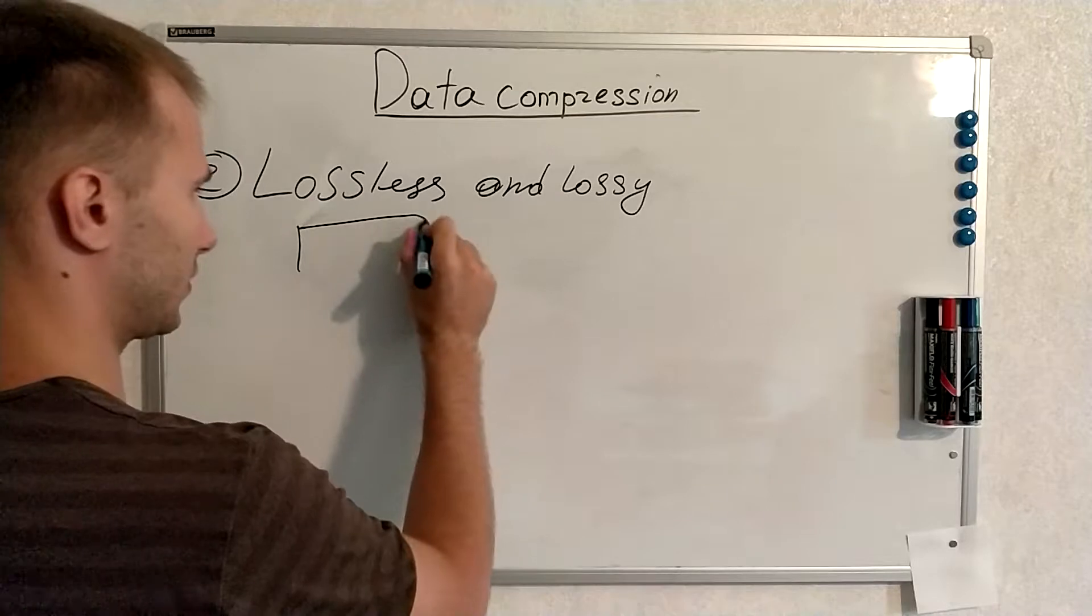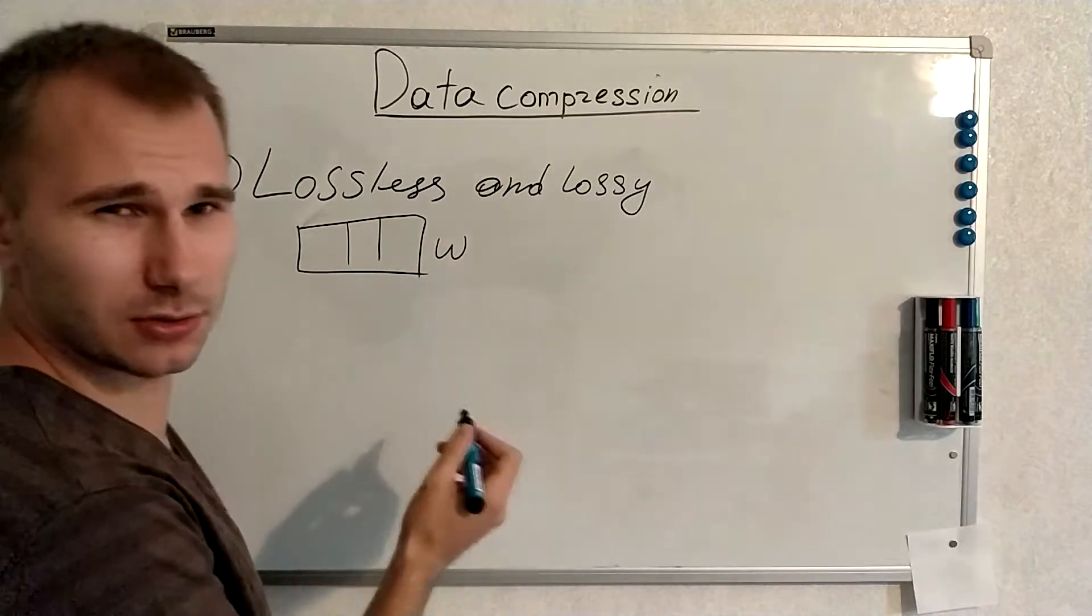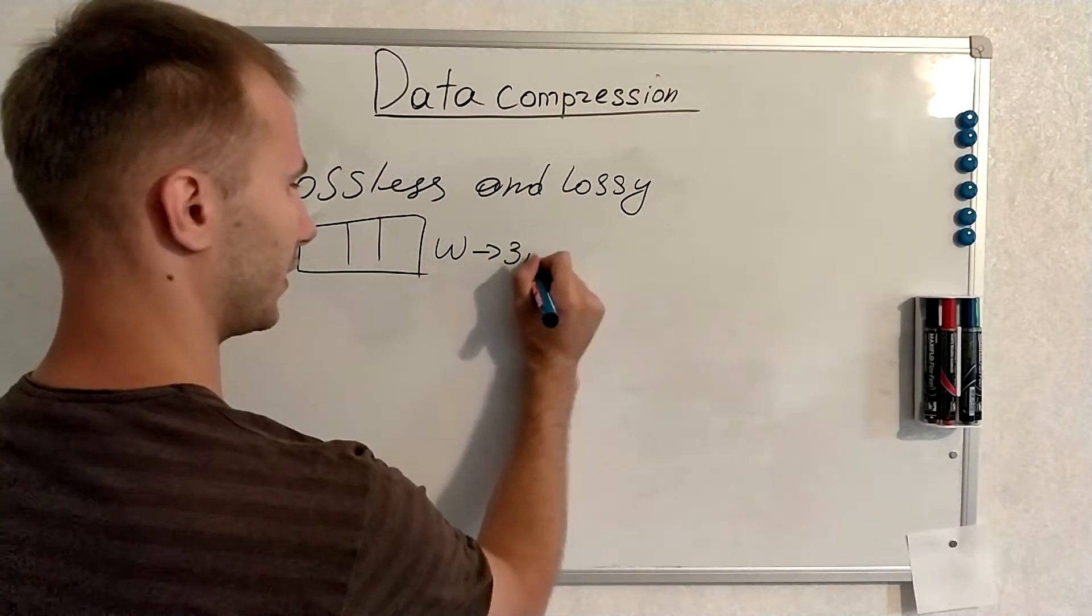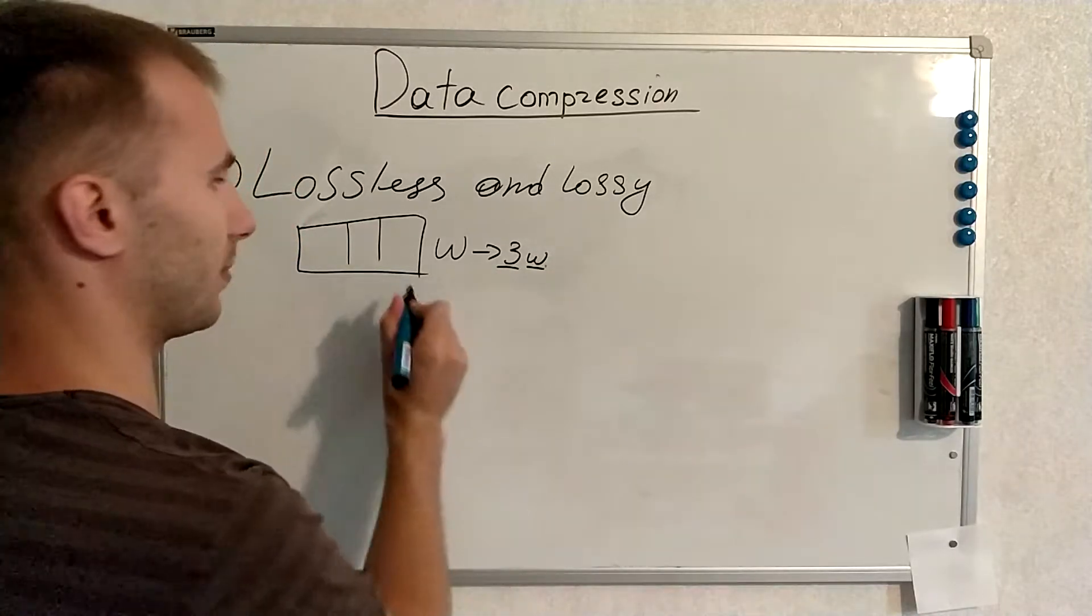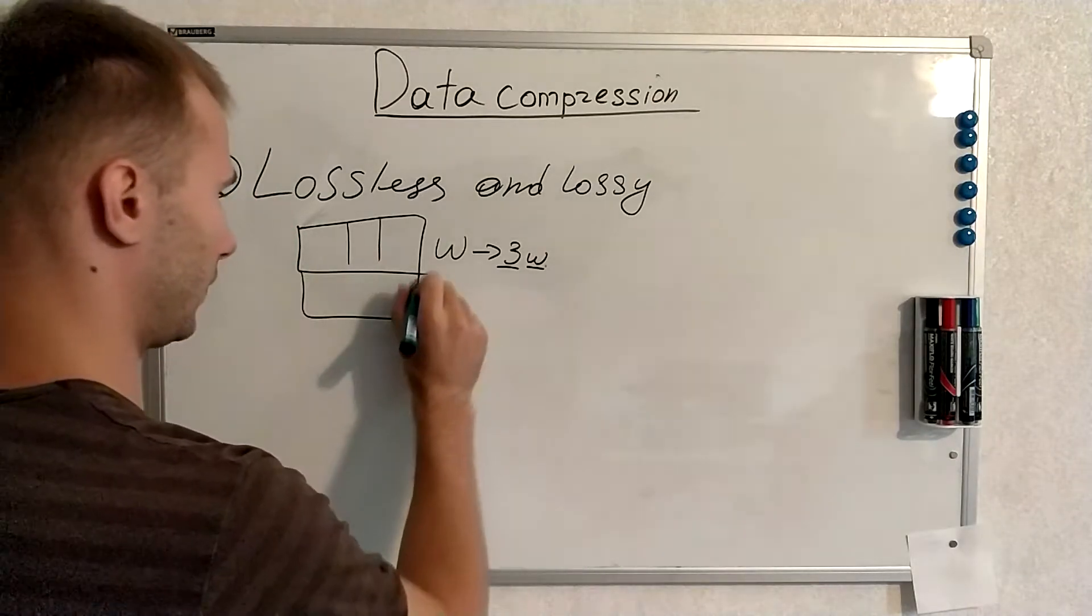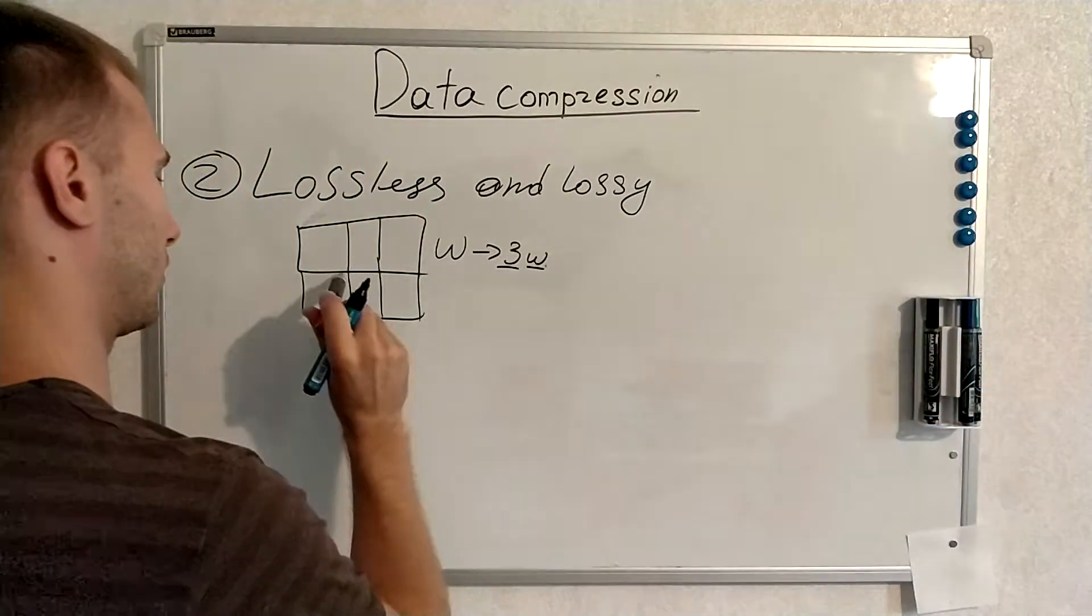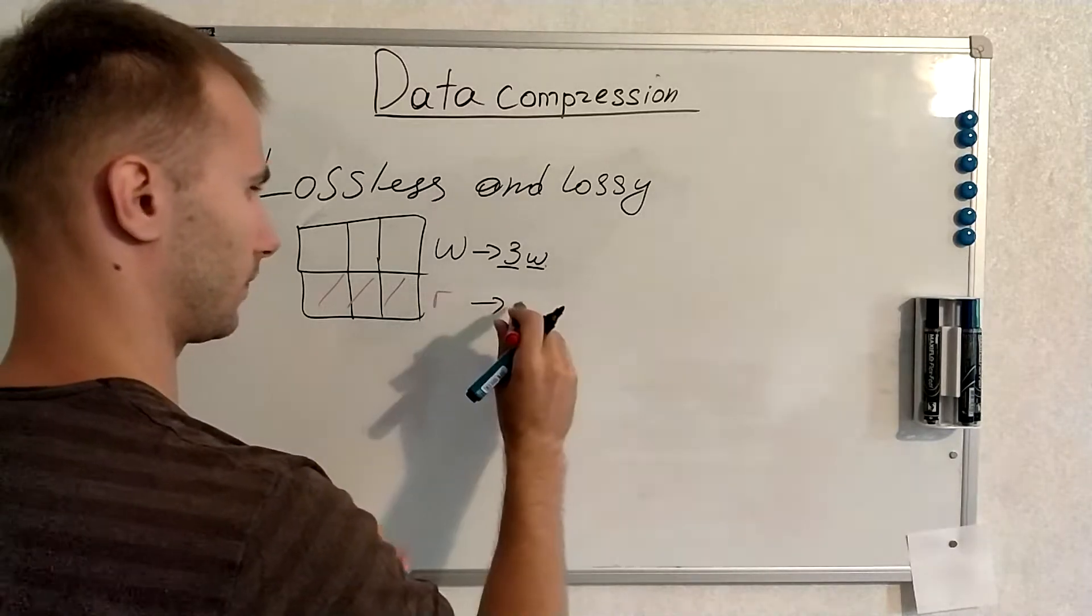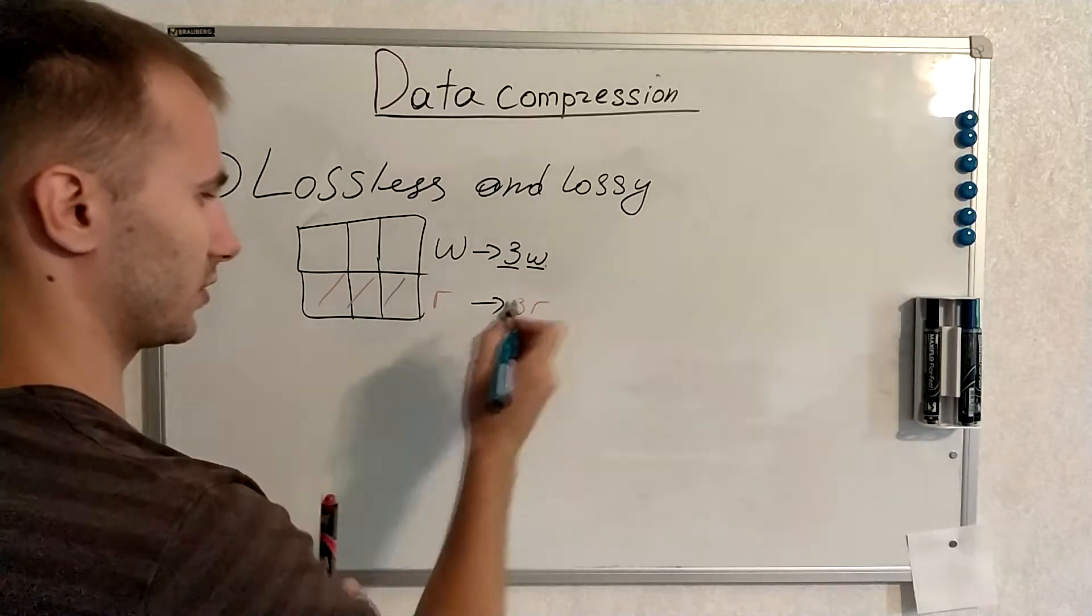A good example is, let's say, we have three pixels which are white. We don't need to encode them as three pixels. We can encode them like three and white. Where three refers to number of pixels and W refers to the color. Let's say it will be red. We will encode it as 3R which refers to three pixels of red color.